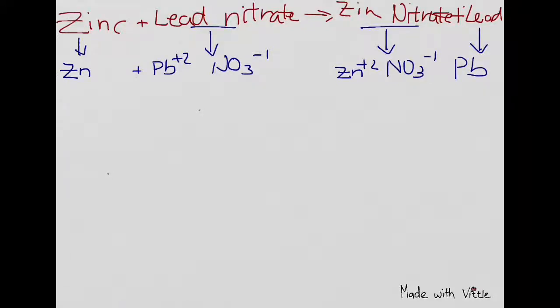Here we have zinc plus lead nitrate yields zinc nitrate plus lead. First we start with zinc metal, which we just keep as Zn, and then we have the add symbol.